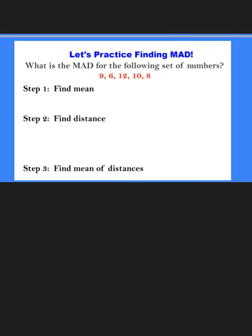Alright, so for this one we're going to go ahead and find the MAD. It says: what is the MAD for the following set of numbers? The first thing we're going to do — step one — is to find the mean of the data set. We're going to take those numbers and add them up together. So 9 plus 6 plus 12 plus 10 plus 8 would give me 45.